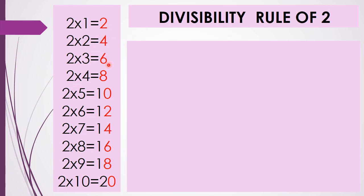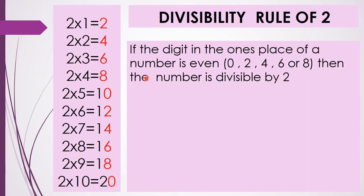When we look at the product, we can see that the 1's place has 2, 4, 6, 8, 0 — and again 2, 4, 6, 8, 0 is continued. So the divisibility rule of 2 is: if the digit in the 1's place of a number is even — that is if the 1's place has 0, 2, 4, 6, or 8 — then the number is divisible by 2.